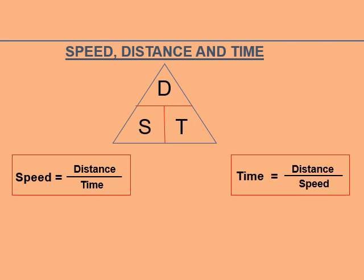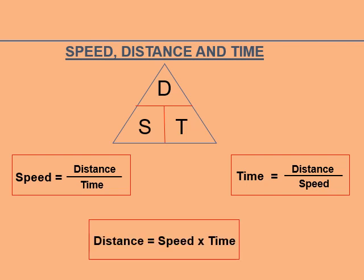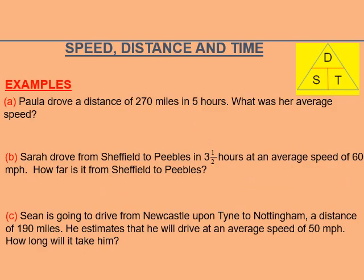Time is equal to — if you cover T with your hands — distance upon speed. And distance is equal to speed multiplied by time. Always remember to make the triangle on paper so that if you are calculating any one of them, the triangle will help you write the correct formula.